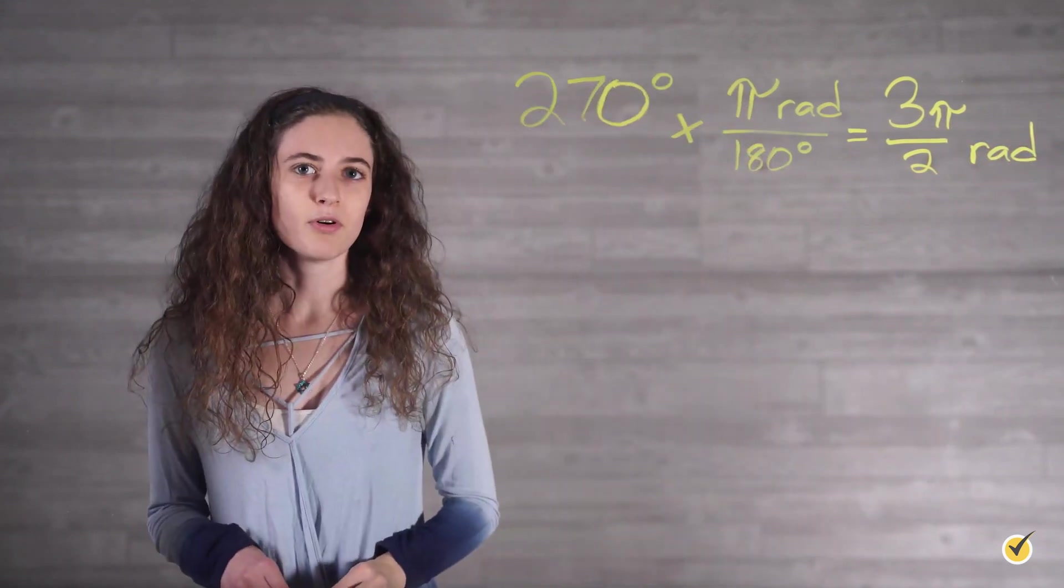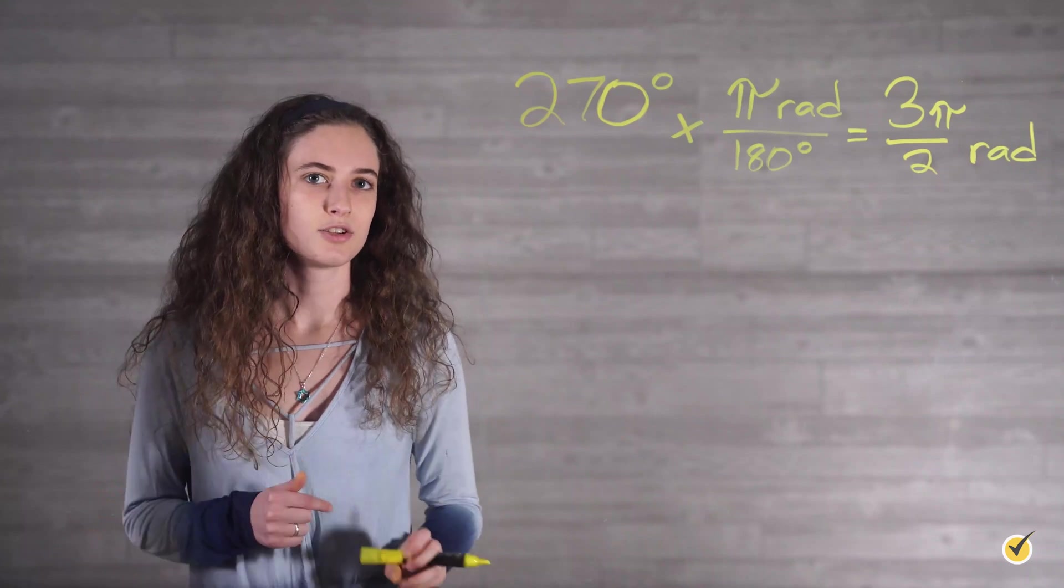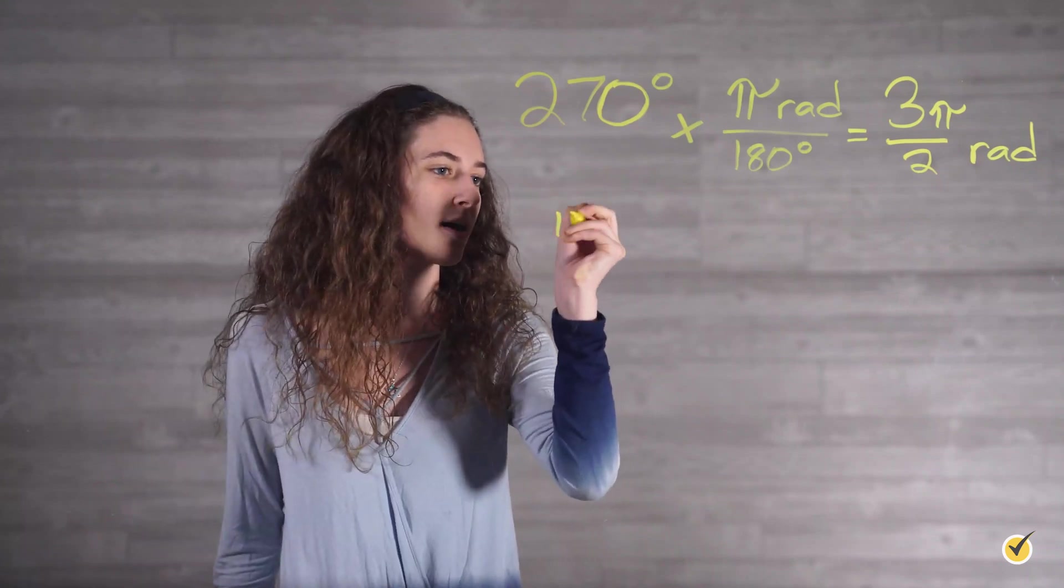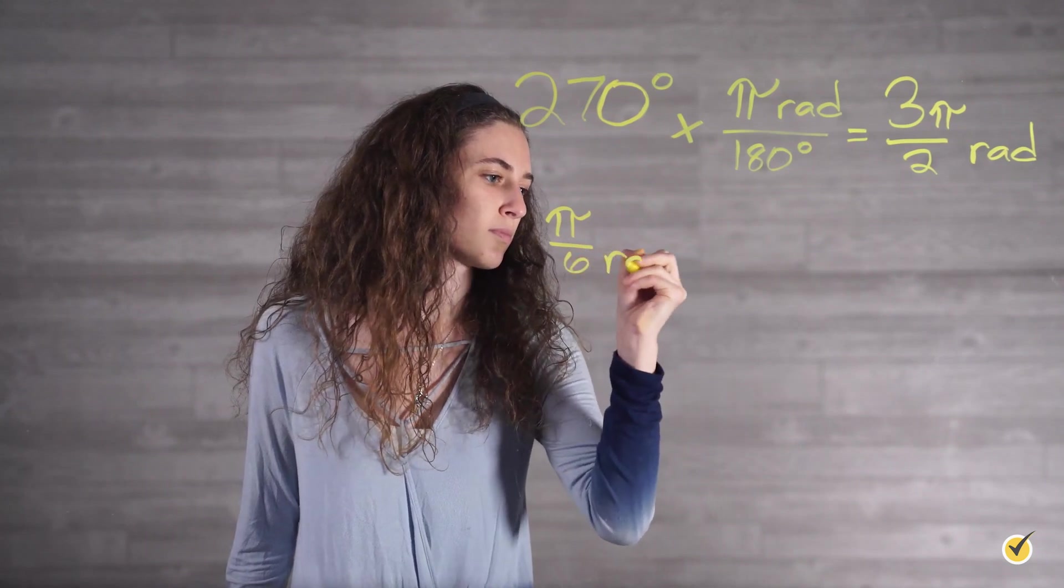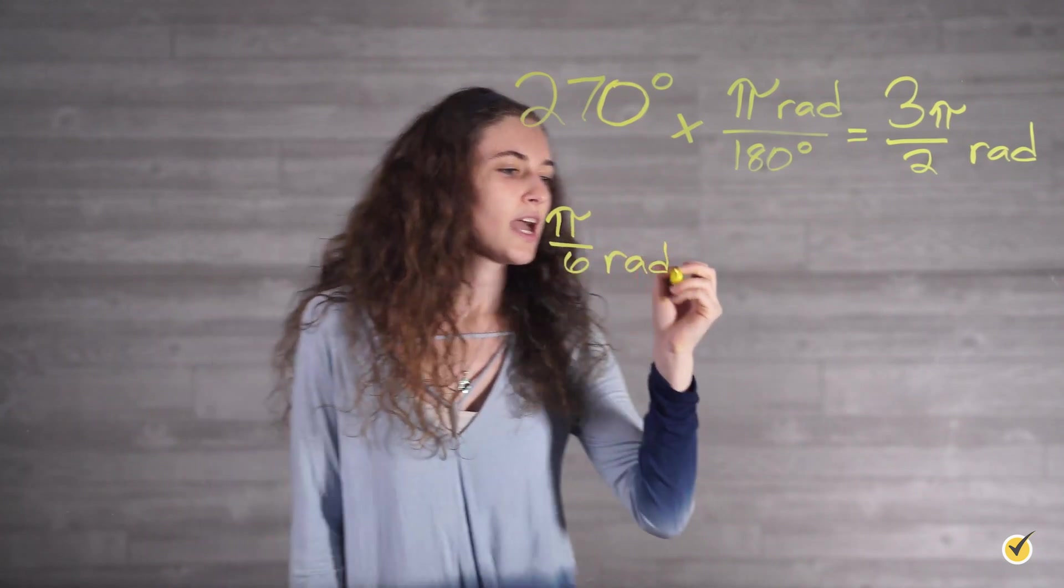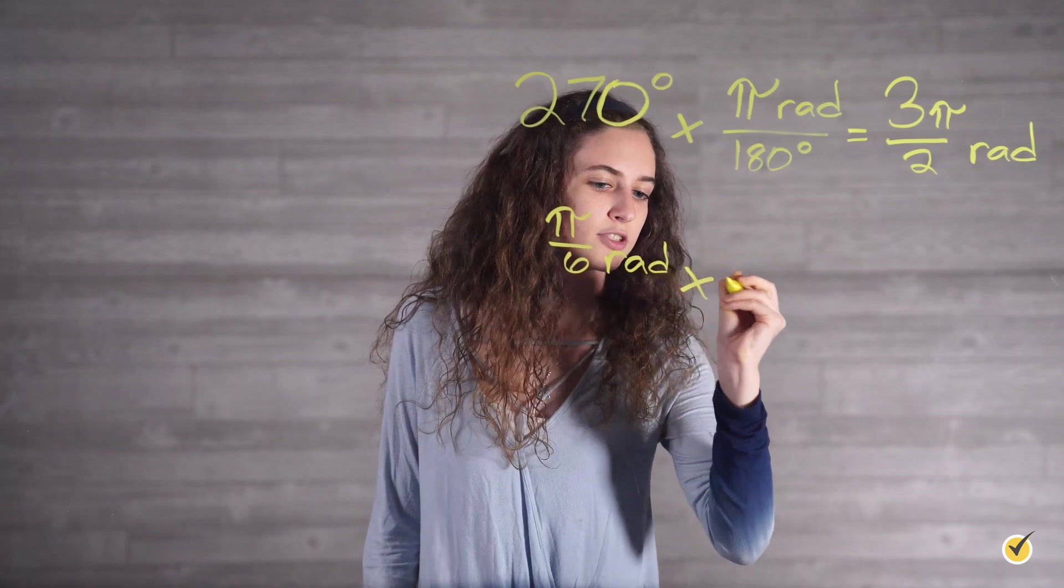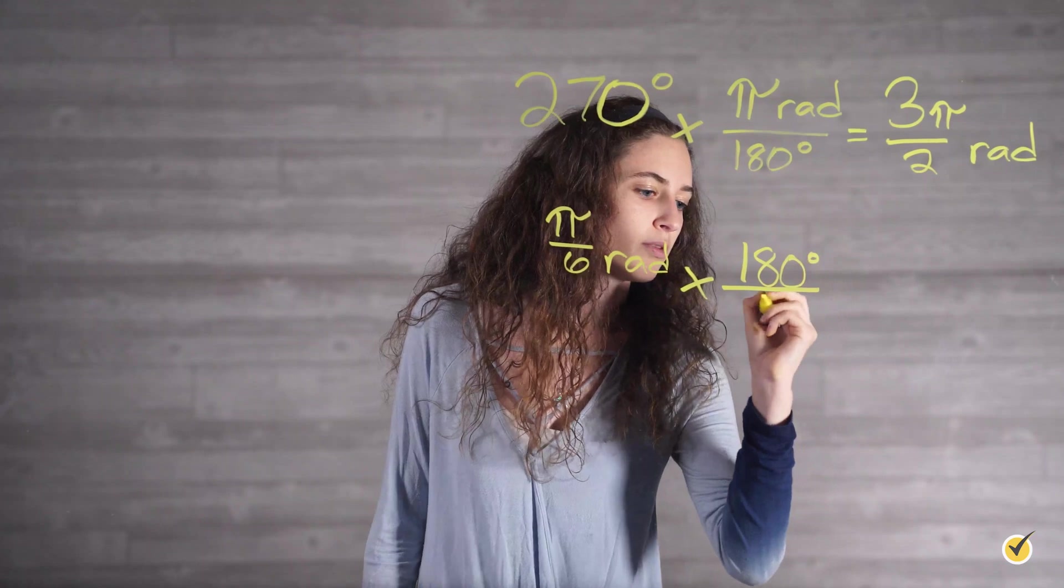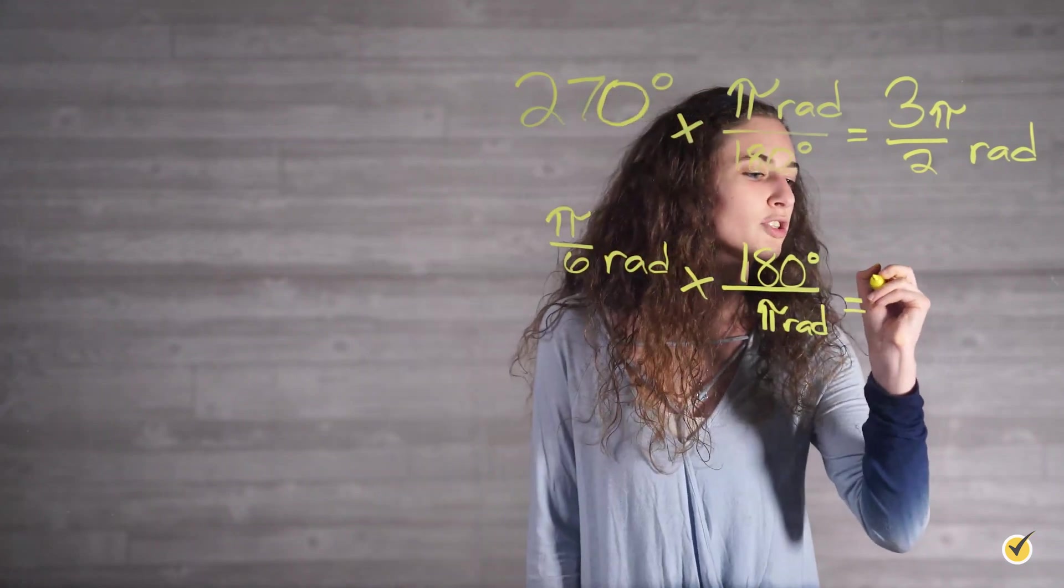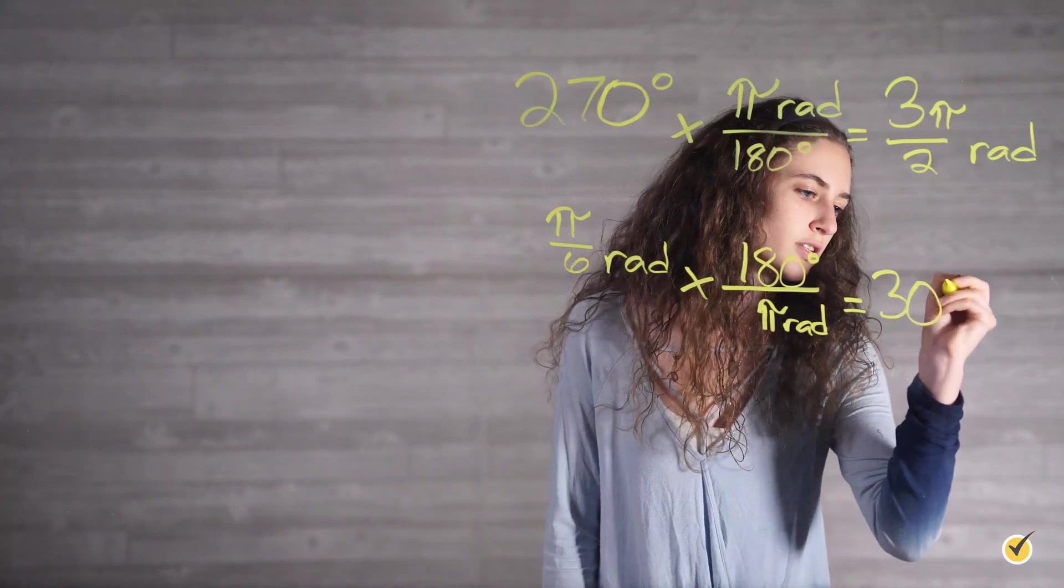Now let's try an example converting from radians to degrees. Let's look at pi over 6 radians. If we multiply this by our conversion factor, we're going to multiply this time by 180 degrees over pi radians, which then simplifies to 30 degrees.